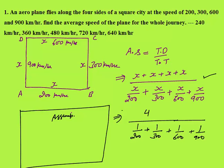I assume distance x such that it is divisible by 200, 300, 600, and 900 — then all time periods become integers and the question becomes very easy. So x should be a multiple of 2, 3, 6, and 9. The LCM of 2, 3, 6, and 9 is 18, so I will assume the distance is 1800 kilometers.